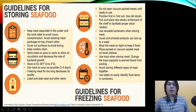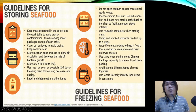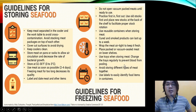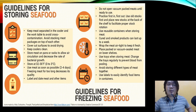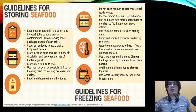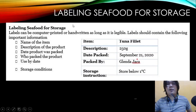Use all old stock first and place new stock at the back of the shelf to facilitate proper stock rotation. Use reusable containers when storing meat. Cured and smoked products can last up to a week. Wrap meat airtight to keep it fresh. Place vacuum-sealed meat on lower shelves. Use trays when storing meat and change them regularly to prevent blood from spilling. Avoid storing different types of meat together. Use labels to easily identify food items in a container.